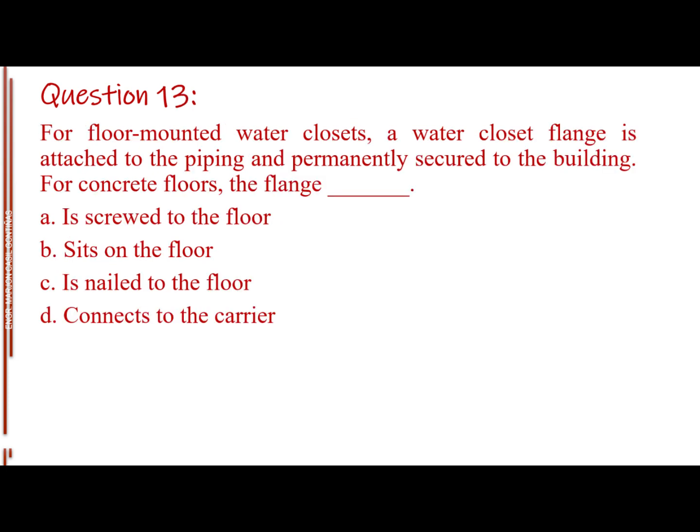Question number 13. For floor mounted water closets, a water closet flange is attached to the piping and permanently secured to the building. For concrete floors, the flange blank. Letter A, Is screwed to the floor. Letter B, Sits on the floor. Letter C, Is nailed to the floor. Letter D, Connects to the carrier. The answer is Letter B, Sits on the floor.